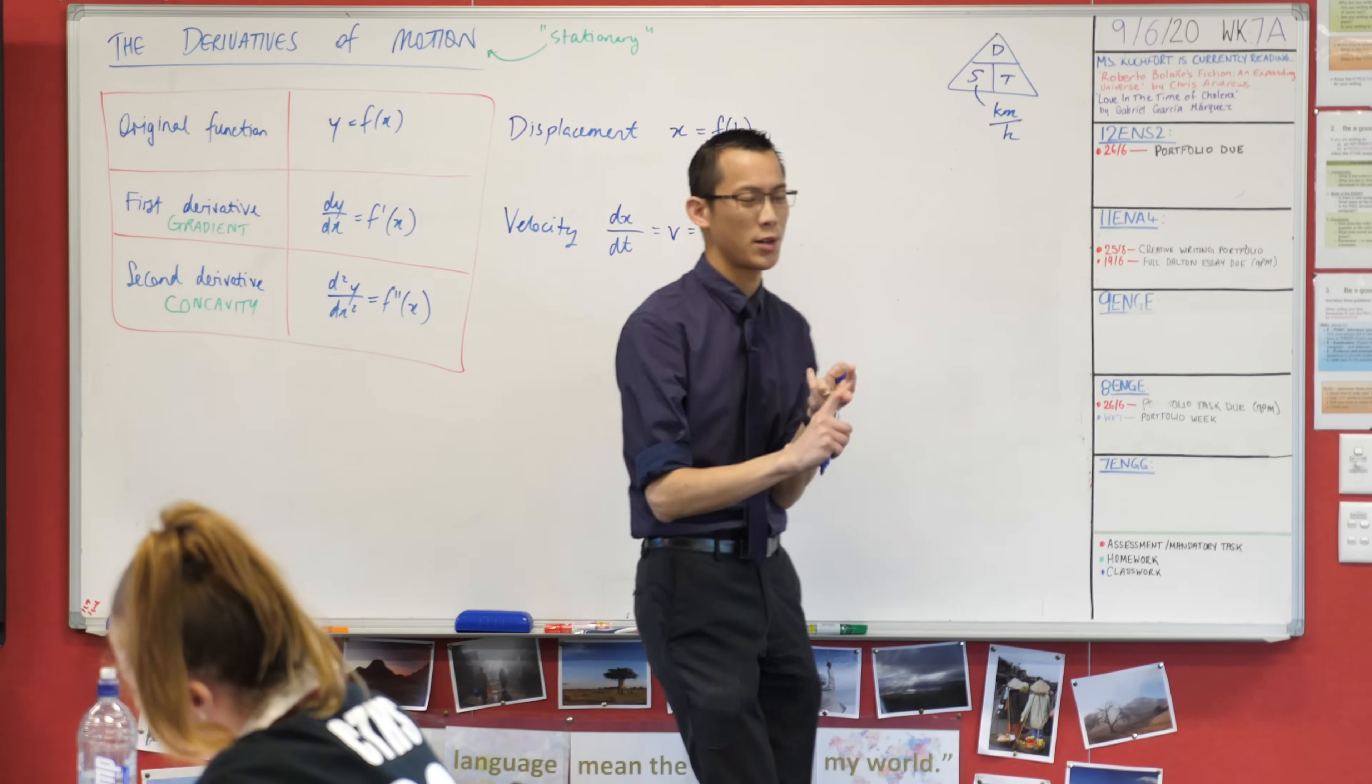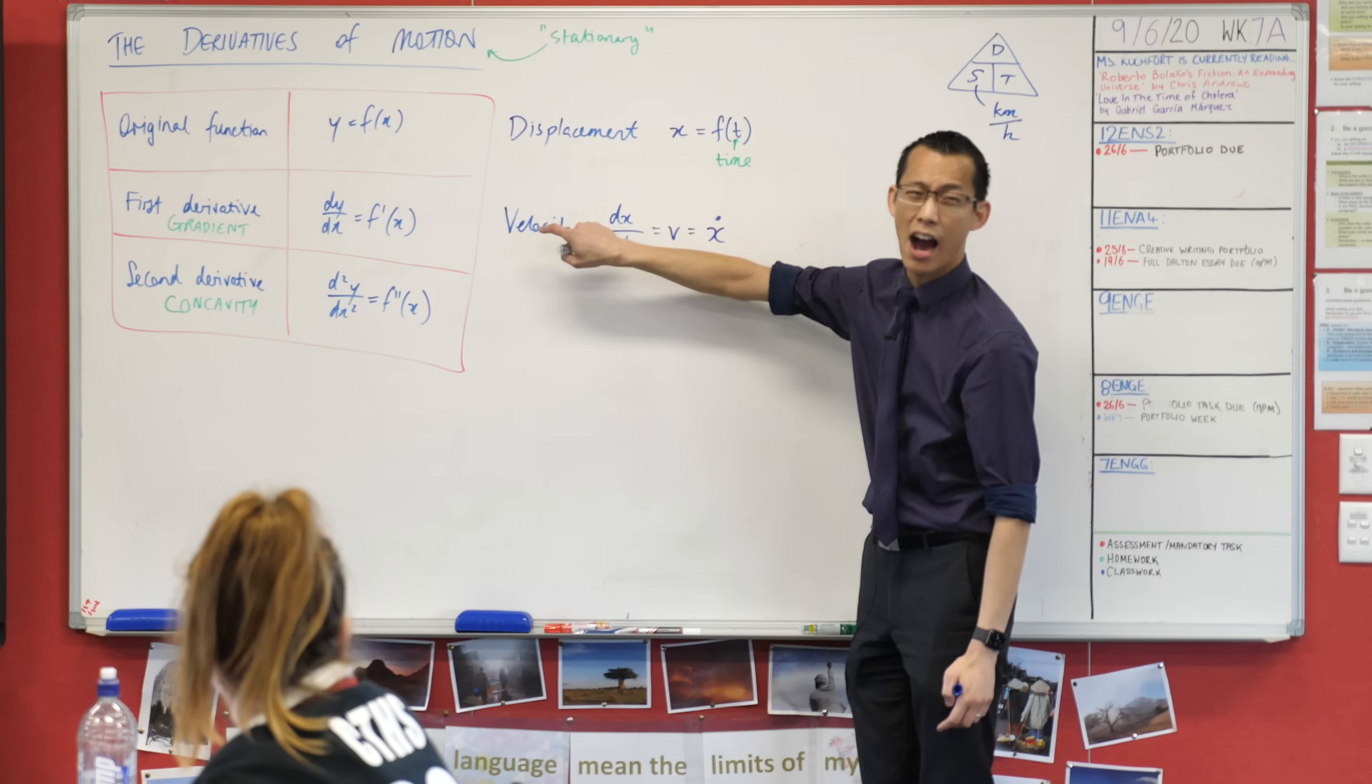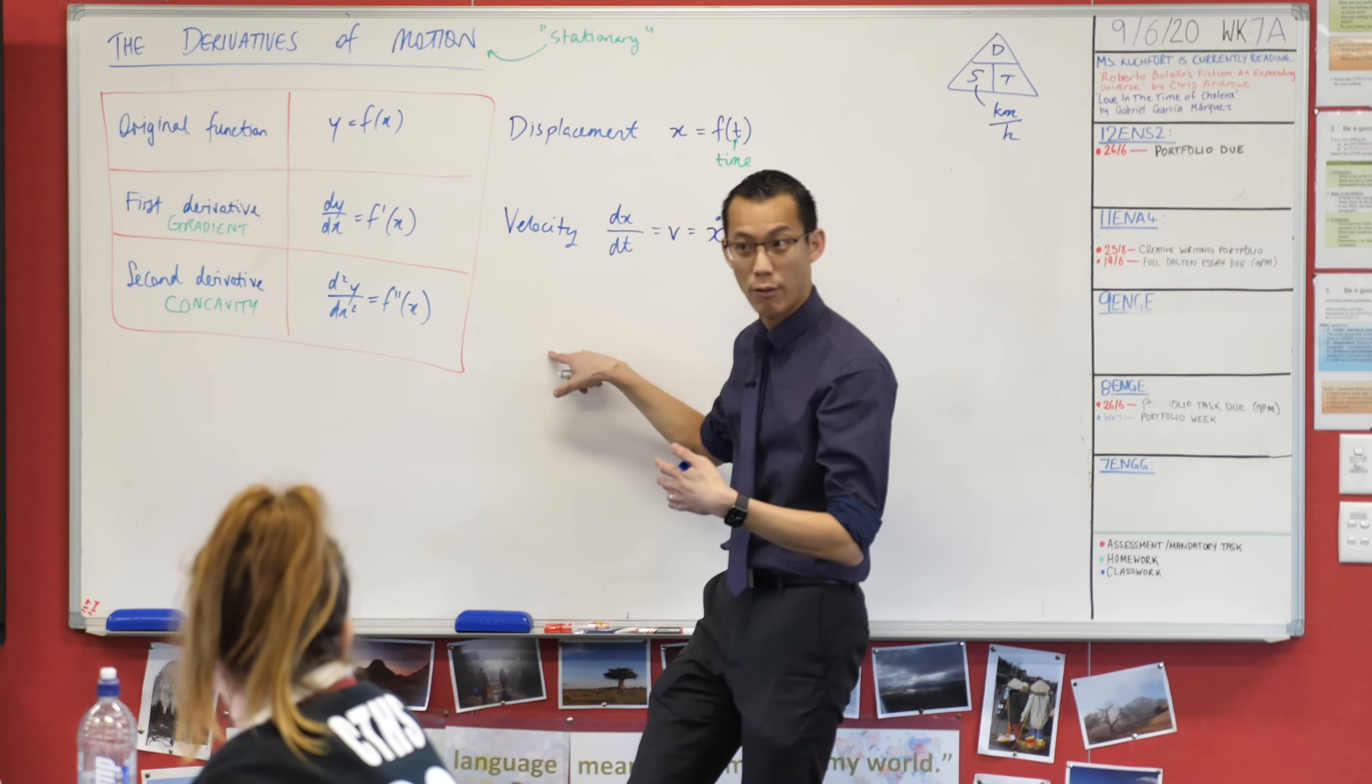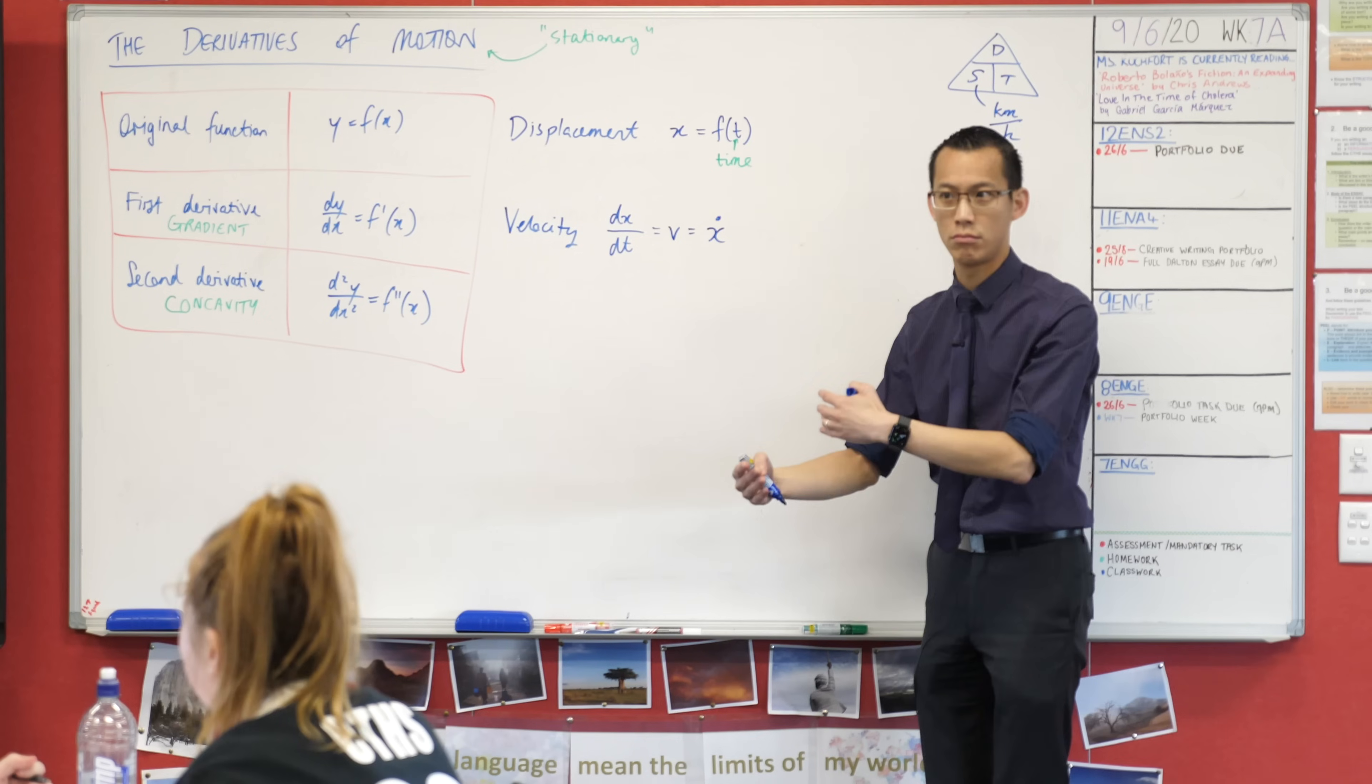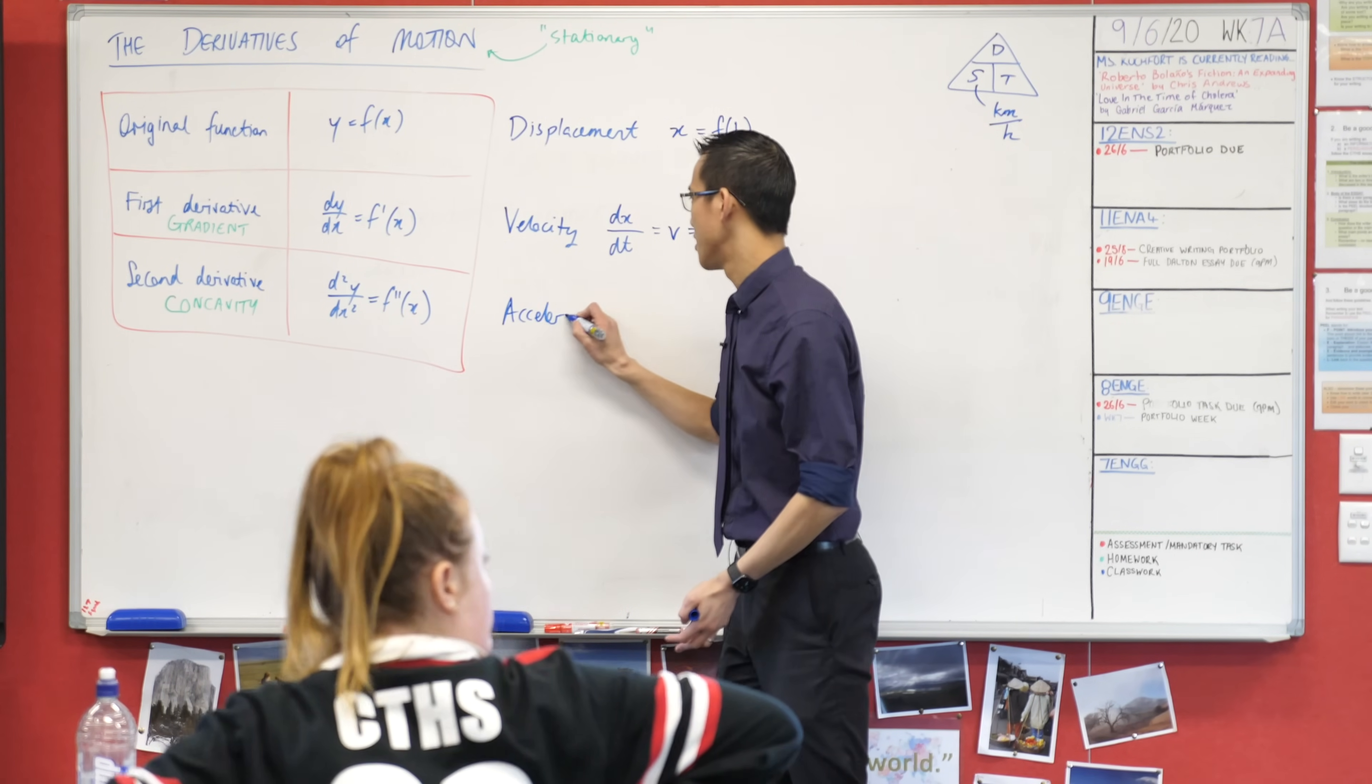Now if I differentiate one more time, I'm thinking about how is velocity changing over time. If you were sitting in a car for example, you could hit the accelerator and that would change your velocity, increase it, or you hit the brakes and that would also change your velocity, decrease it. What's the name for that? That pedal you're putting on, it's the acceleration. That's the name we apply to the change in velocity.